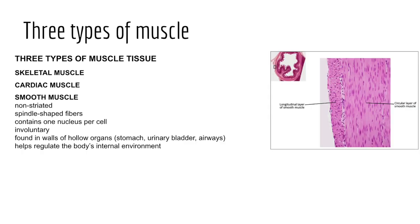Finally, we have smooth muscle, found in the walls of our hollow organs such as the digestive system, respiratory system, and reproductive system. Unlike skeletal and cardiac muscle tissue, smooth muscle is non-striated because we don't see sarcomeres. There's a single nucleus per cell, and the muscle fibers are somewhat spindle-shaped — fat in the middle and tapered at each end. Smooth muscle is under involuntary control, or it's generally described as regulating the body's internal environment.